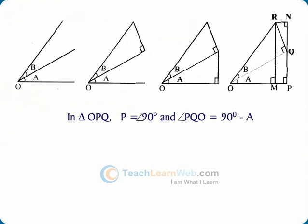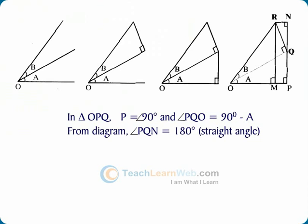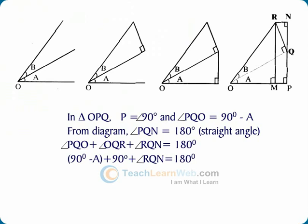In triangle OPQ, angle P is equal to 90 degrees and angle PQO is equal to 90 degrees minus A. From the diagram, angle PQO plus angle OQR plus angle RQN equals 180 degrees. So 180 minus A plus angle RQN equals 180 degrees. Therefore, angle RQN equals A.